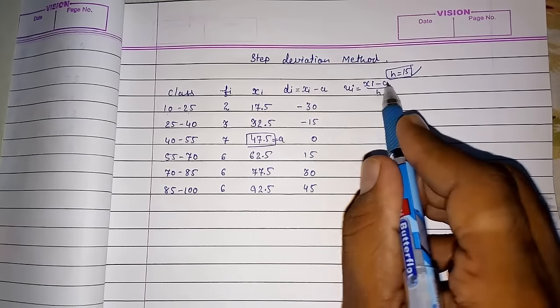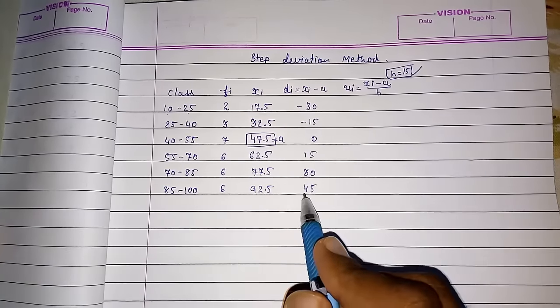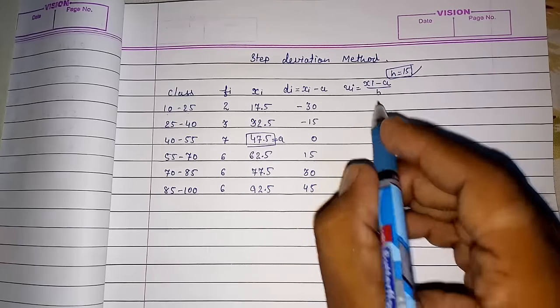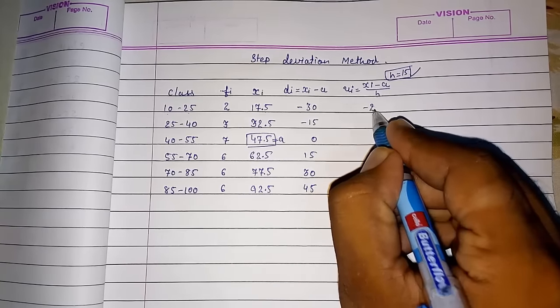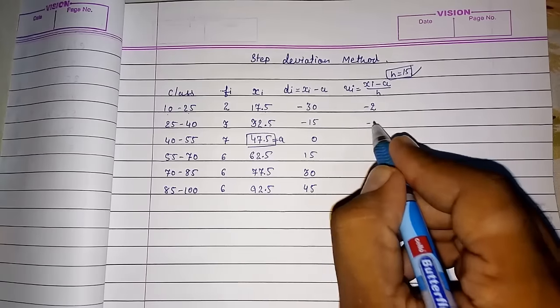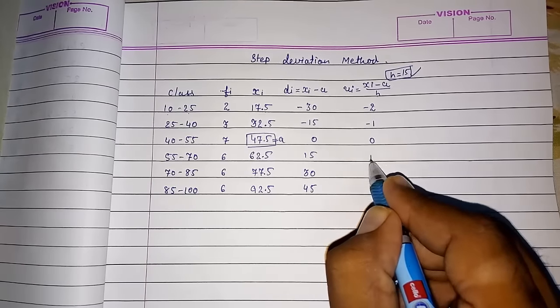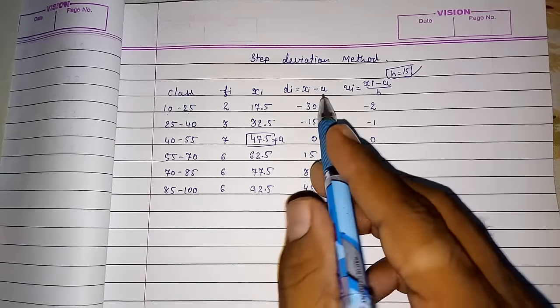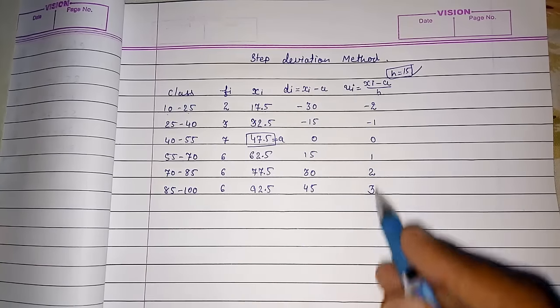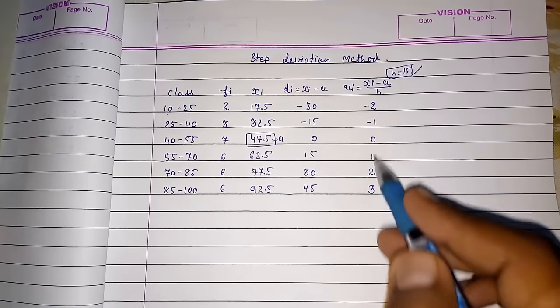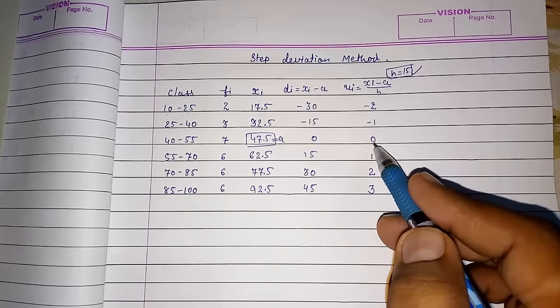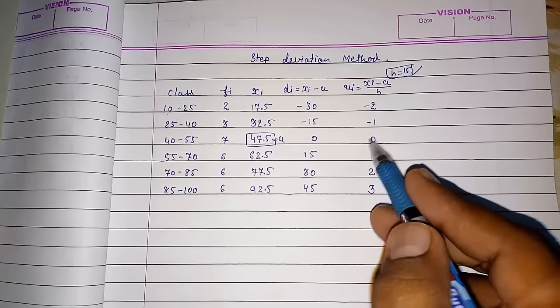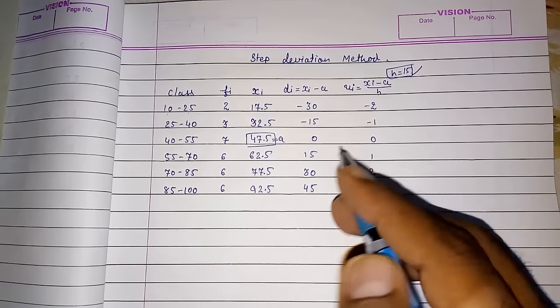Now you got h 15 and you had subtracted the xi minus a you had done here. So minus 30 divided by 15 you will get minus 2. Minus 15 divided by 15 minus 1. Zero. One. Two. And three. You will get a pattern. Look here. Here also you had got pattern. Here also you will get pattern. And these numbers are small. Very small. Nearby 0, 1, 2, 3, 4 like that only. So your multiplication will be very easy.